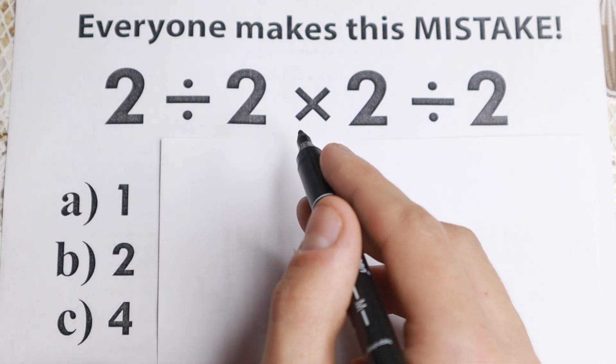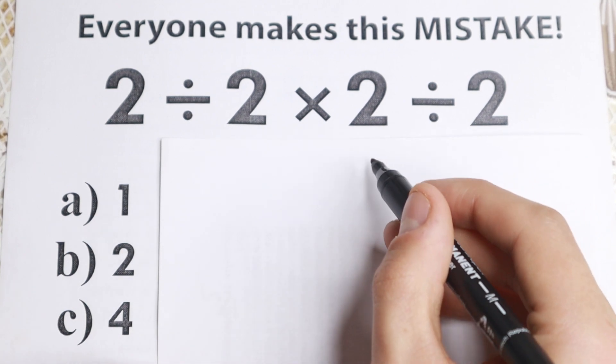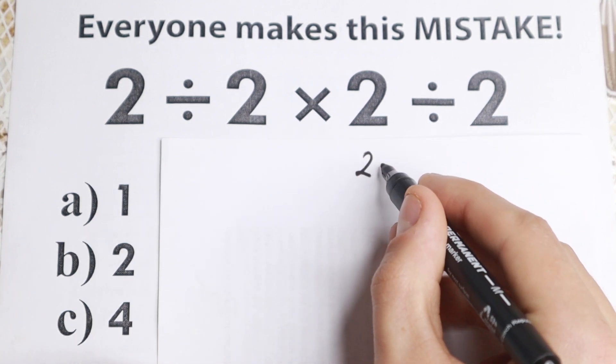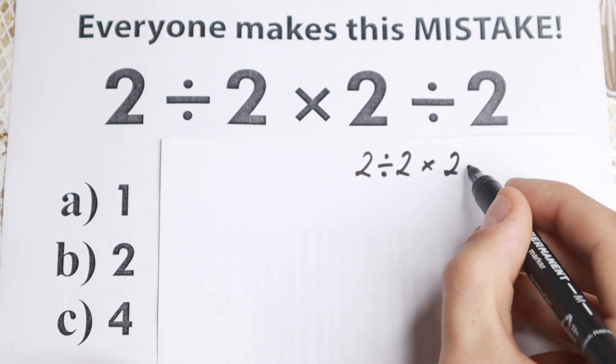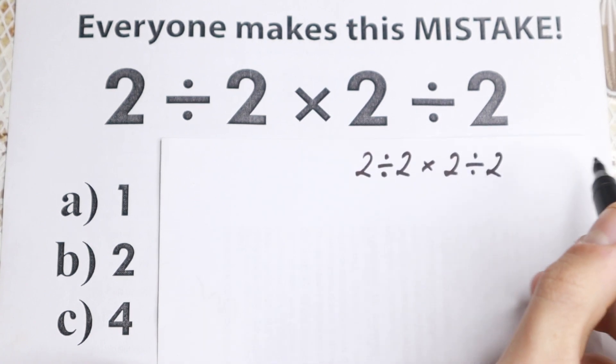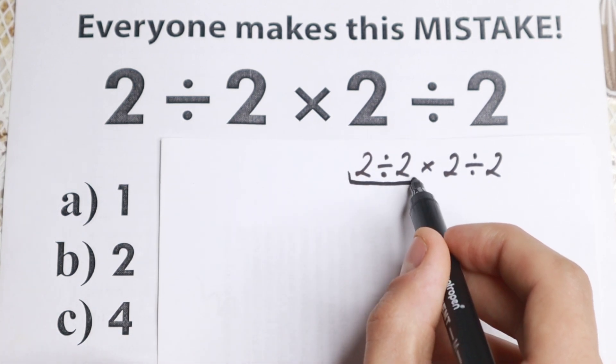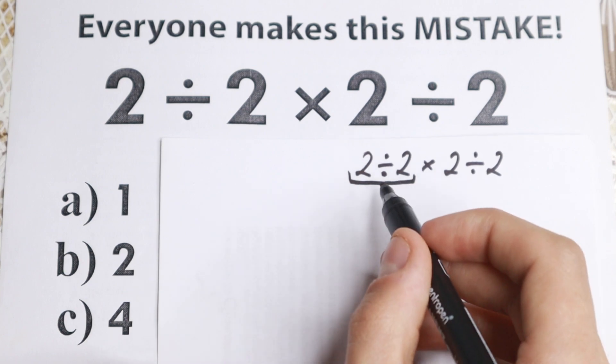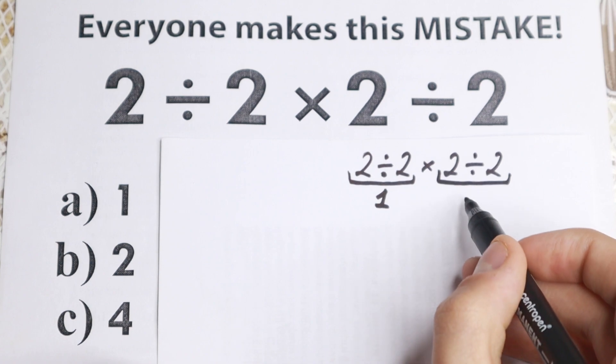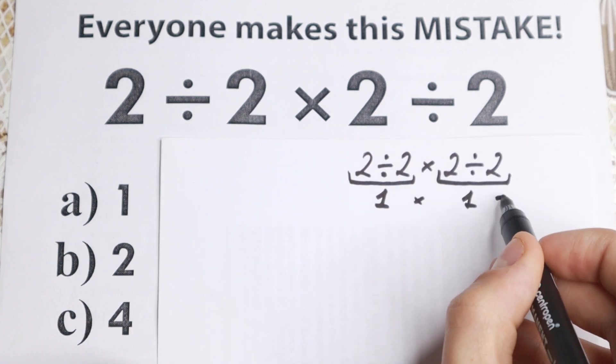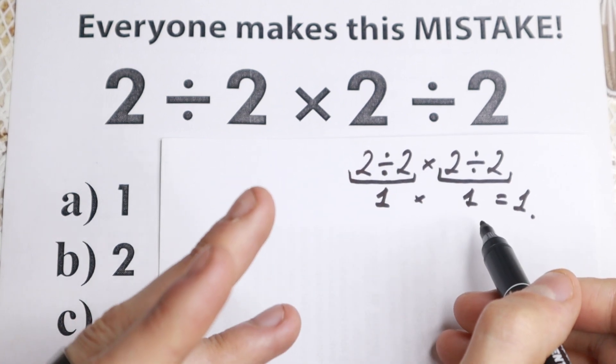So we have 2 divided by 2 times 2 divided by 2. So let's start with this approach. So a lot of students solve it like that. They see that right here we have 2 divided by 2 in the beginning. And they divide, 2 divided by 2 equal to 1. And right here we have the same thing, so 2 divided by 2 equal to 1. 1 times 1 equal to 1. So right now I'm not going to tell you that this is correct or not correct.